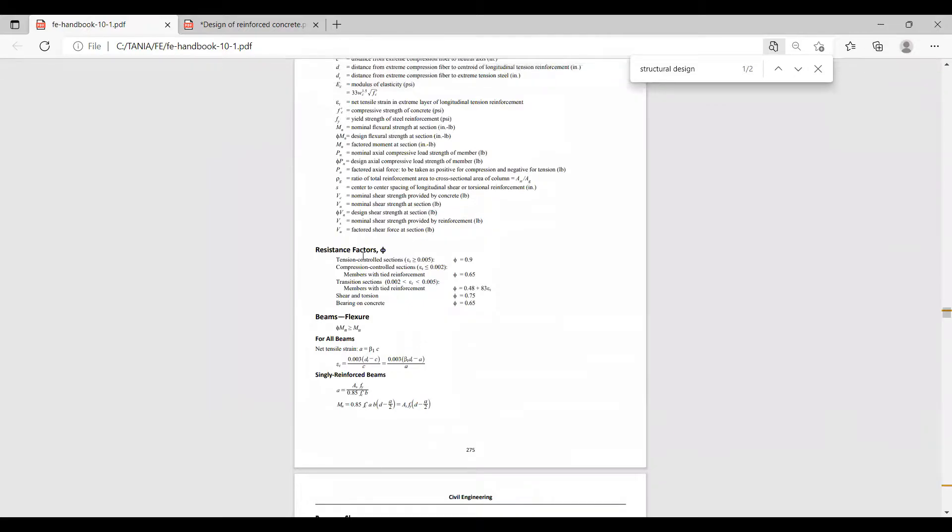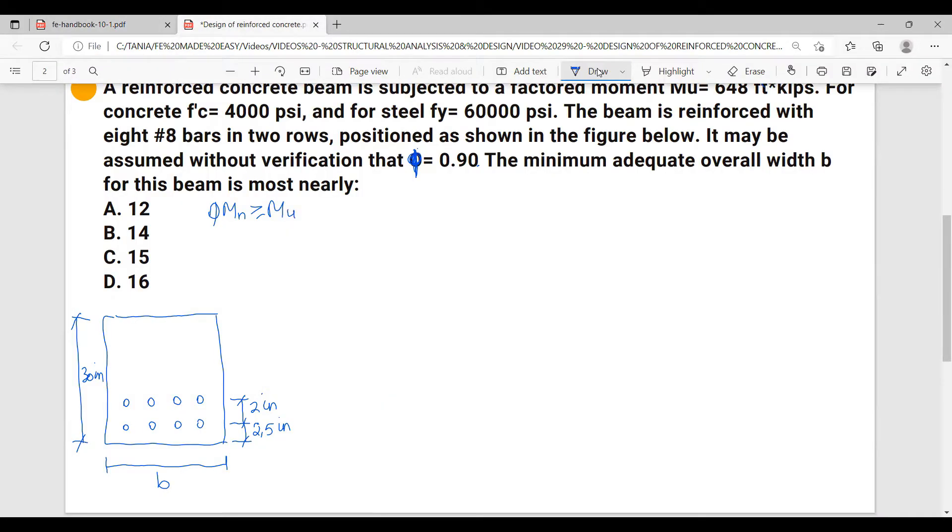There you go to resistance factors. Here, beams flexure, we have that φMn has to be greater than or equal to Mu. Let me write this down. We're given Mu equals 648 ft·kips, so this gives me that Mn equals Mu over φ, and that will be 648 over 0.9.